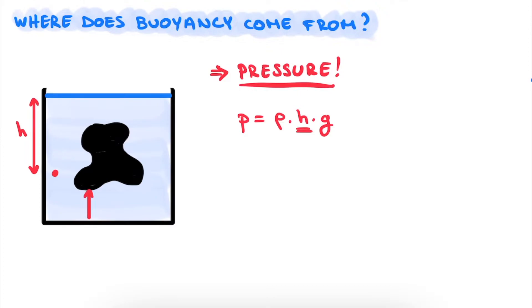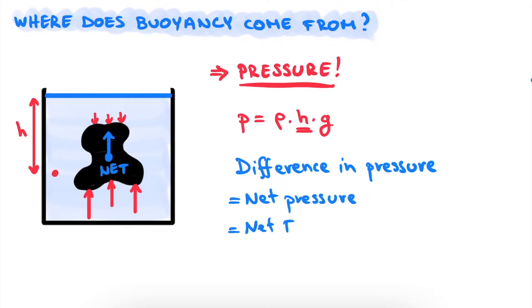Knowing this, we can imagine the pressure force exerted on the bottom of the object pushing upwards will be larger than the pressure force pushing downwards on the top of the object. And due to this difference, there will be a net force pointing upwards. And this force is called the buoyancy.